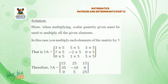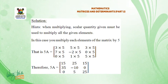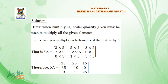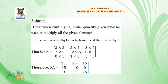Solution. Hint: when multiplying, the scalar quantity given must be used to multiply all the given elements. In this case, you multiply each element of the matrix by 5.